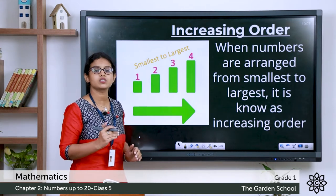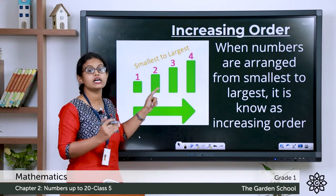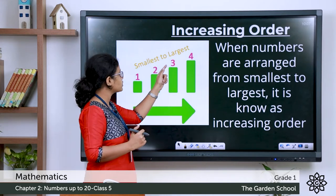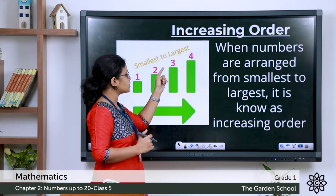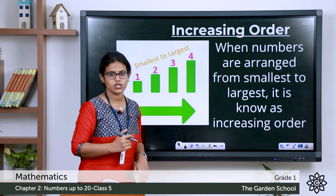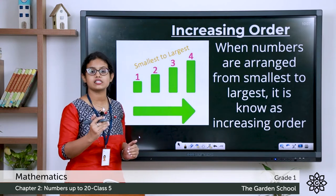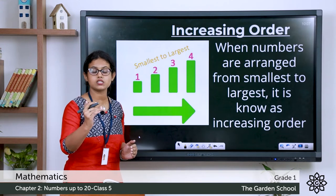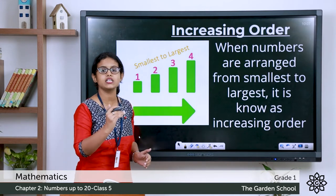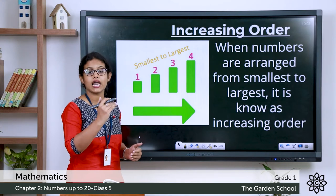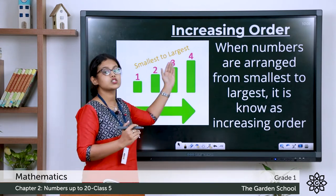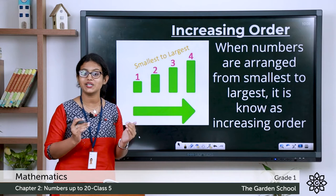From the first block you jumped to the second block — number 2 is larger than 1. From the second block you jumped to the third — number 3 is larger than 2. From the third to the fourth — number 4 is larger than 3. So you are moving in increasing order, that is from the smallest to the largest. So that is increasing order: when you arrange numbers from smallest to largest.